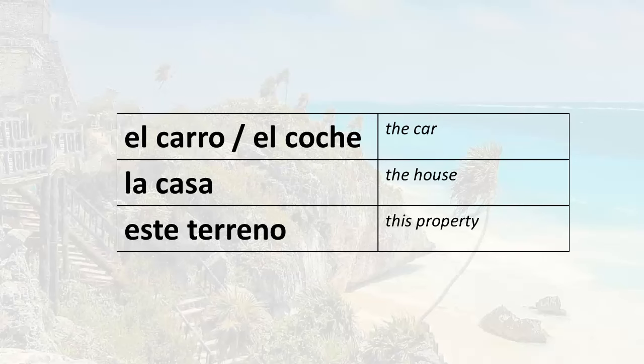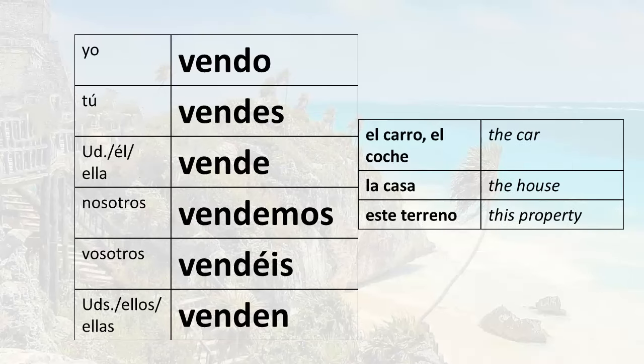When we use vender, we also talk about what we are selling, so we use a noun or some nouns with the verb vender. For example, if you want to talk about selling your car — el carro or el coche, depending on where you are in the Spanish-speaking world — the house, la casa, or este terreno, this property. So: vendo el carro or vendo el coche; vendo la casa; vendo este terreno.